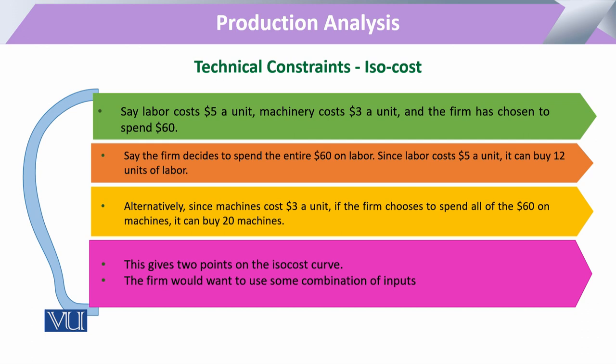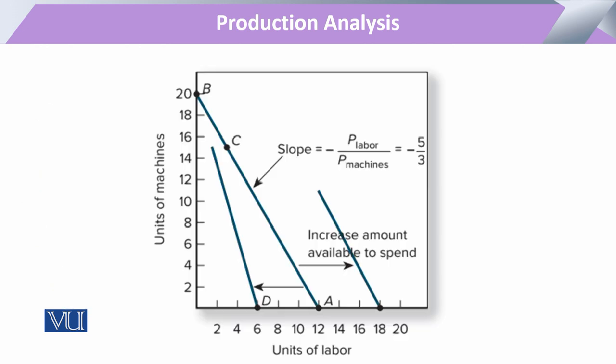وہ producer ان دونوں کی combination استعمال کرتے ہوئے 60 روپے خرچ کرتا ہے اور اس سے اپنا output achieve کر رہا ہے۔ اب اس firm پہ یہ depend کرتا ہے کہ وہ 60 روپے چاہے صرف capital پہ خرچ کرے، چاہے صرف labor پہ، یا دونوں inputs پہ تقسیم کرے۔ ان تمام combinations کو plot کریں گے تو وہ ISO cost curve بنے گا۔